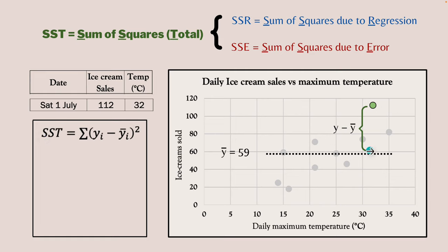Even though R squared has a nice interpretation - say, 84% of the variation in ice cream sales is explained by temperature, rain, and holidays - we do have a problem with R squared when you have a small number of observations. Because when you have a small number of observations, you have a low number of degrees of freedom. In that case, we might need to look at an adjusted R squared value, which takes that into account. You don't have a nice interpretation of adjusted R squared, but at least we can use it for comparison across models.